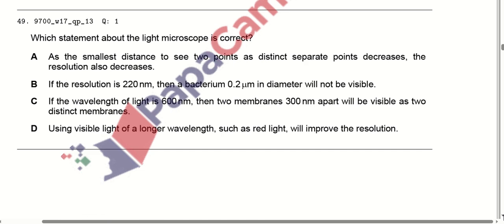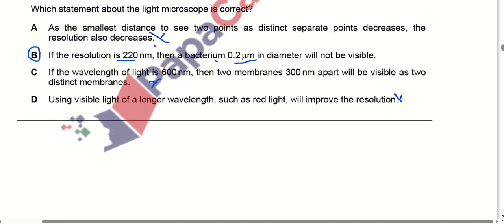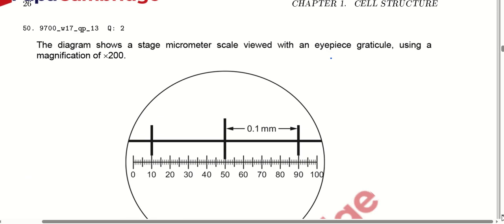Moving to MCQ number 49: which statement about the light microscope is correct? As the smallest distance to distinguish two separate points decreases, the resolution does not also decrease — that is wrong. If the resolution is 220 nanometres, then a bacterium 0.2 micrometres in diameter — that can be visible. Because the size of the bacterium is not directly related to resolution in that way, and the wavelength options are also ruled out.